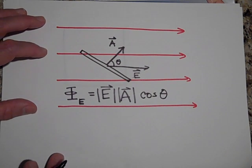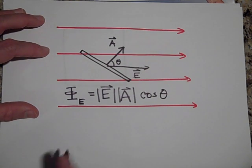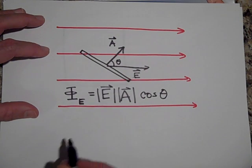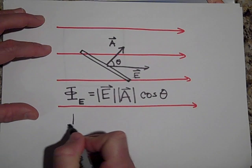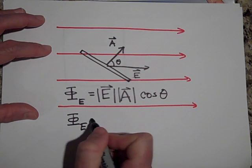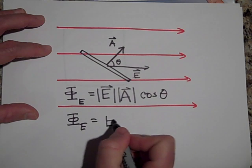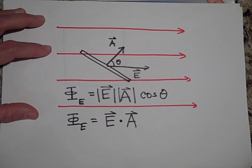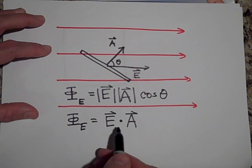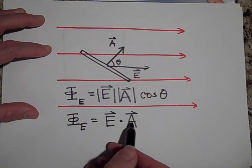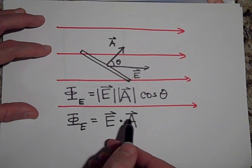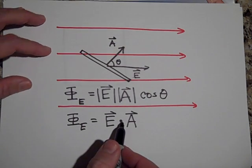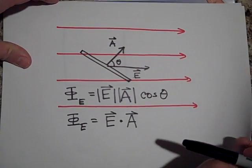Now we can rewrite that a different way if we wanted to. If we only want the part of E that's in the same direction as A, then another way of writing that is that the electric flux is equal to the vector E dot the vector A. This says take the part of E that's parallel to A and multiply it by A. Notice that this flux is a scalar quantity because the dot product is also called the scalar product, so it gives you a scalar quantity.